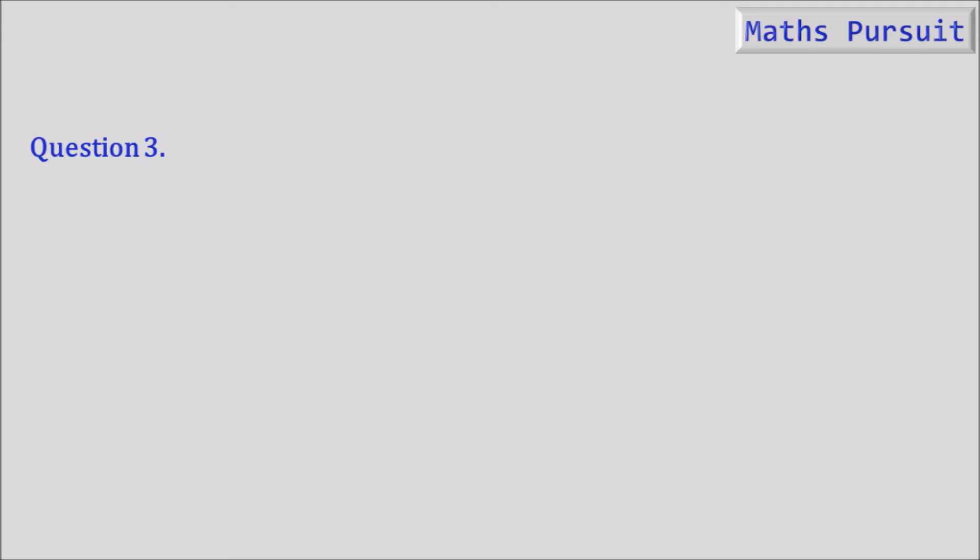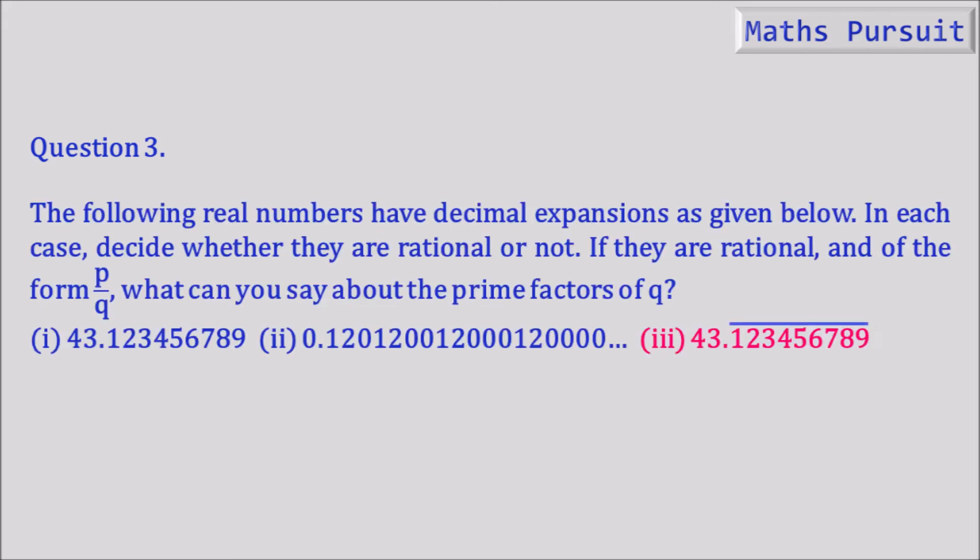Coming to the question, it is saying the following real numbers have decimal expansions as given below. In each case, decide whether they are rational or not. If they are rational and of the form P by Q, what can you say about the prime factors of Q?